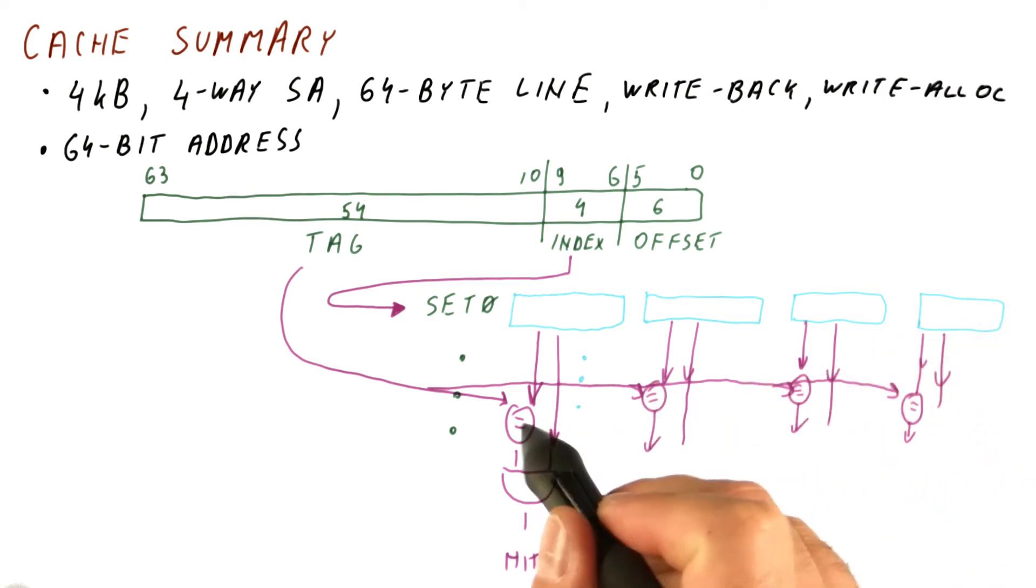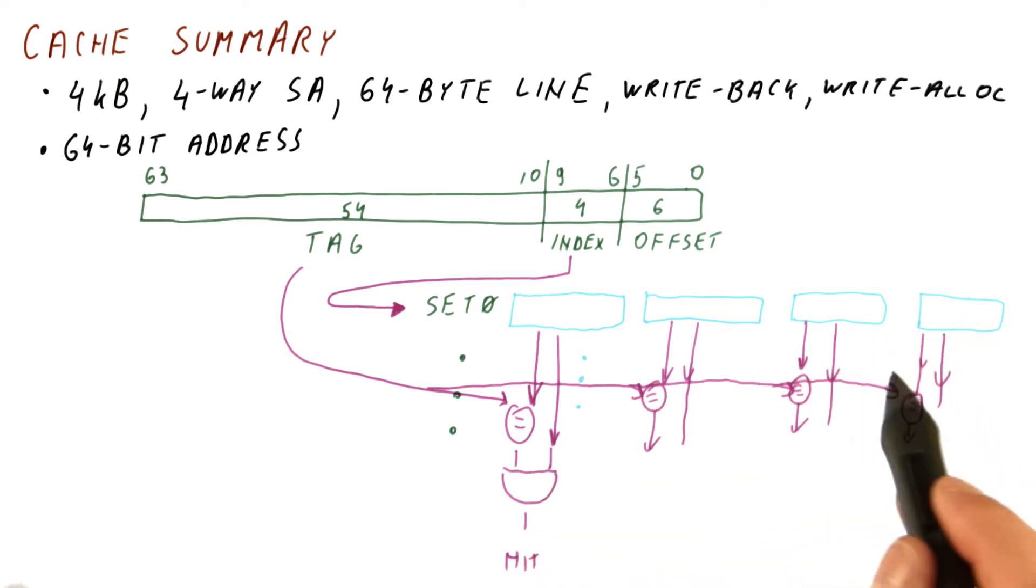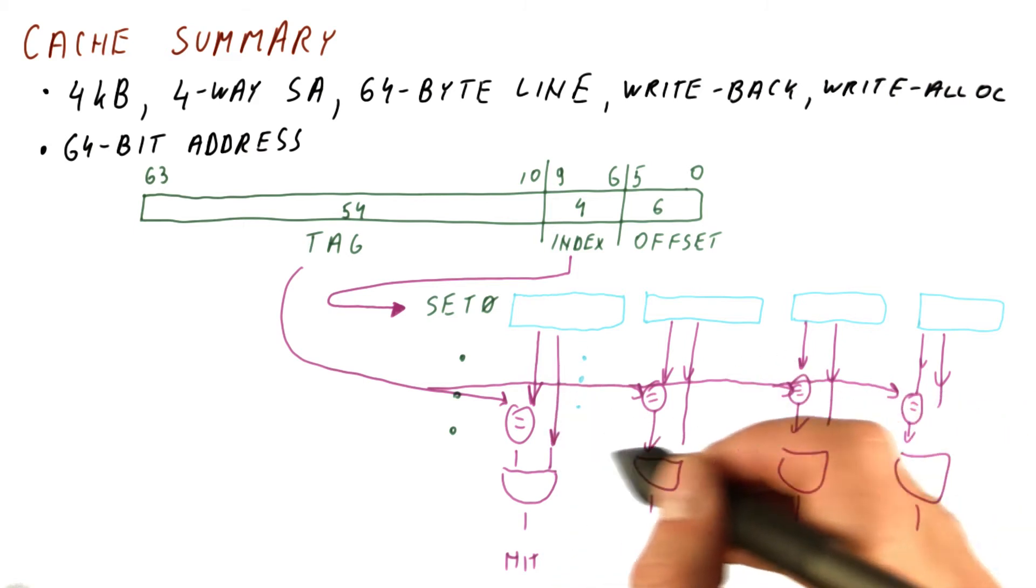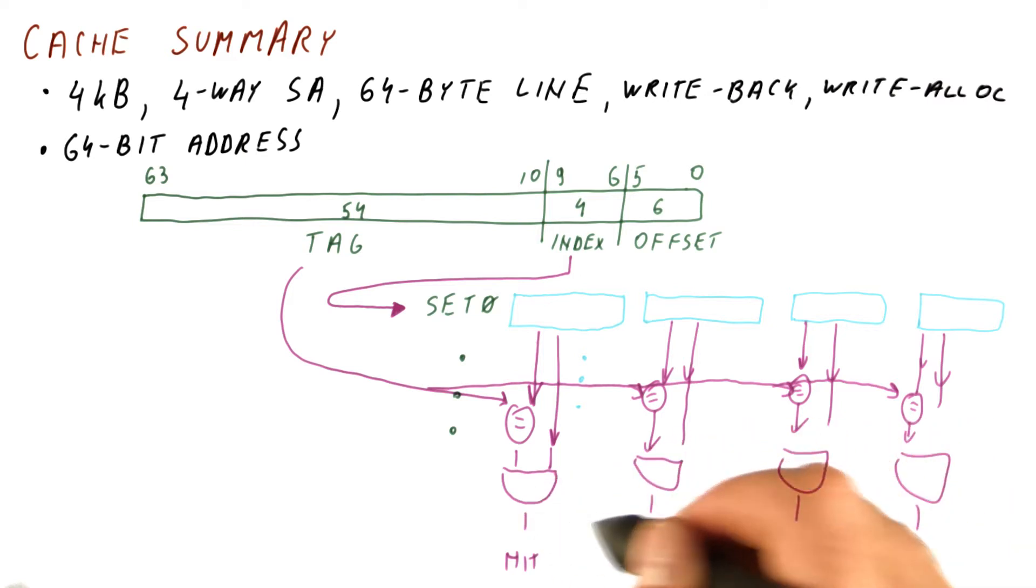As you can see, there are four separate activities in order to determine for each of these whether it's a hit. And then there is an OR circuit that checks if any one of these is 1. If that OR returns a 1, that means that we have a hit.